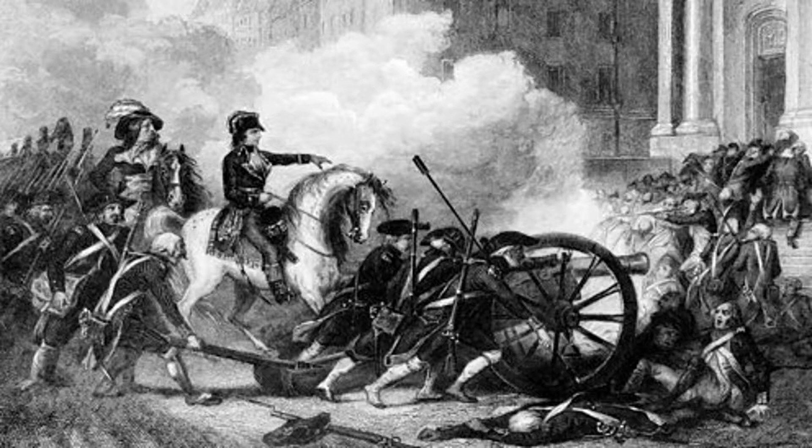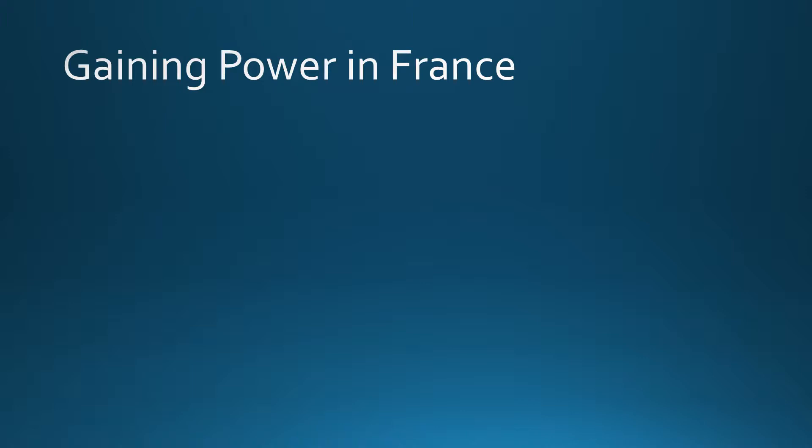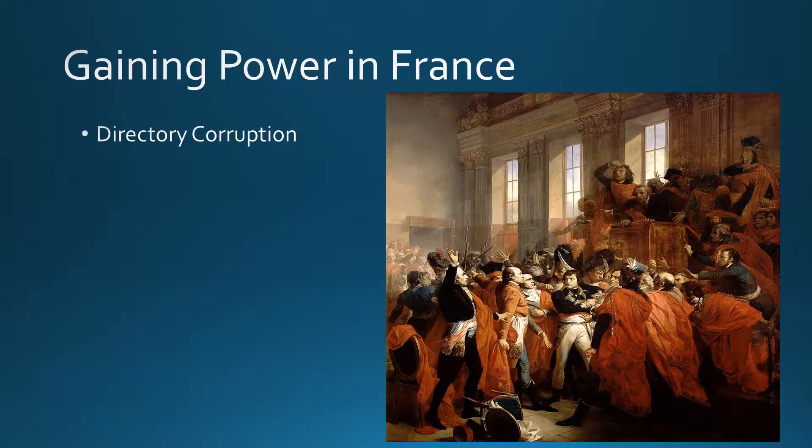Here is a picture of Napoleon defending the government from the royalists, and this shows the military campaigns he was waging in northern Italy. It's with this notoriety and fame that he gains power in France.